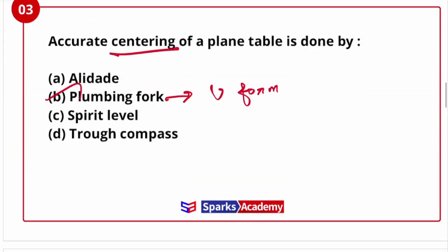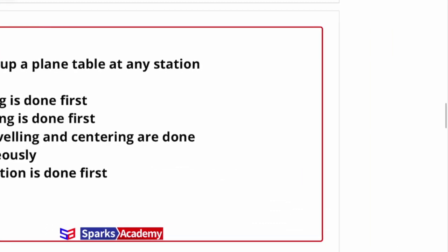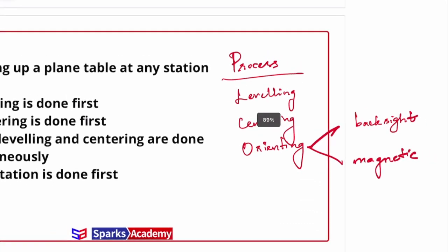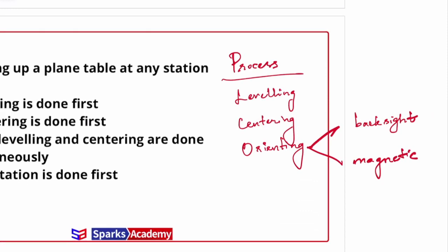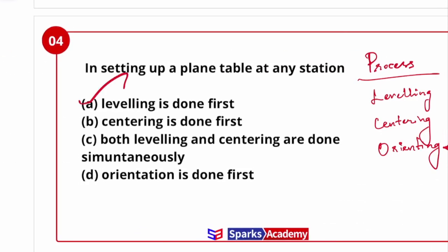The next question is: in setting up a plane table at any station — is leveling done first, centering done first, both leveling and centering done simultaneously, or orientation done first? Three processes are done: one is leveling, centering, and the third is orientation. Usually, if a plane table is set, first leveling is done, then centering, then orienting. So leveling is done first. The option is A.